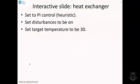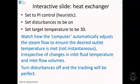The next interactive slide: we'll look at the heat exchanger. We're going to set this to PI control and use the heuristic, which is some sort of automatic tuning rule. We're going to put the disturbances on and set the target temperature to be 30. We want you to watch how the computer automatically adjusts the steam flow to ensure the desired outlet temperature is met. This isn't going to be instantaneous, but it's fairly fast in terms of the dynamics of the system - about as fast as you could reasonably be.